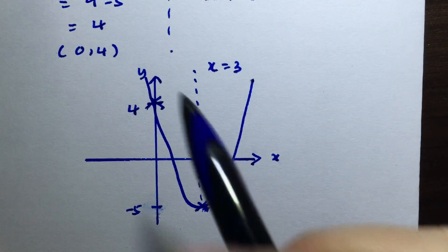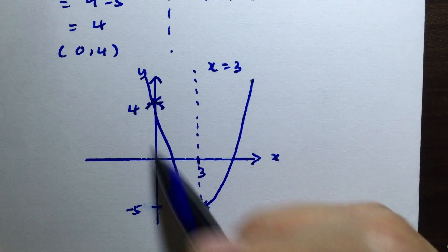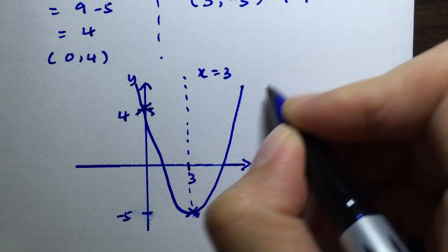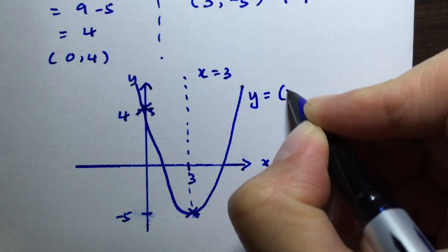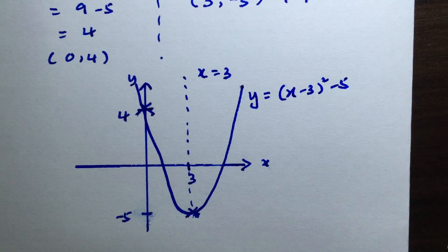Hopefully your graph looks more symmetrical than mine. This is the equation y = (x - 3)² - 5.